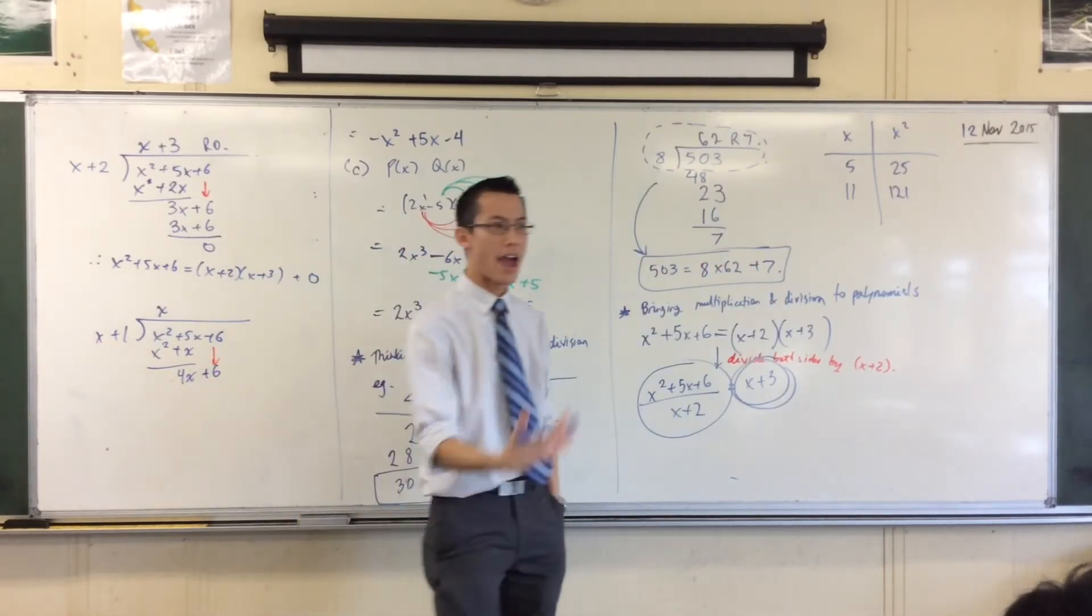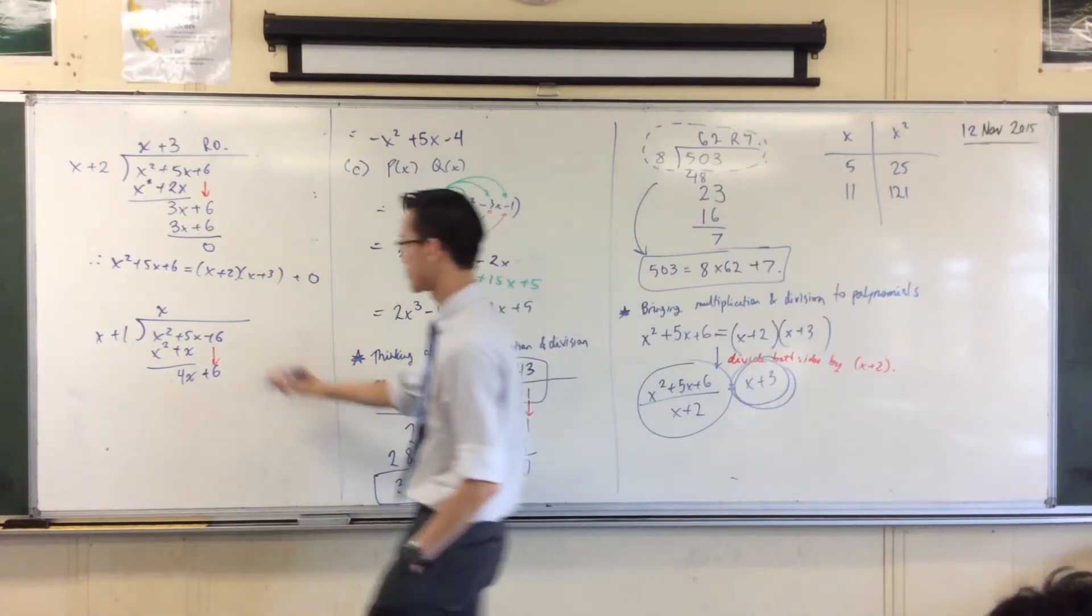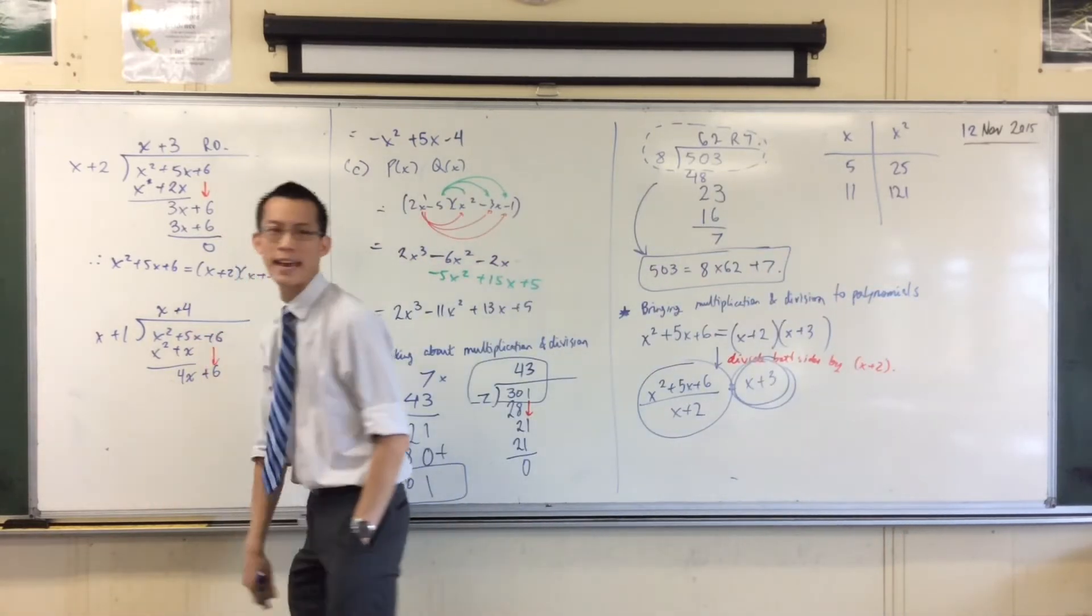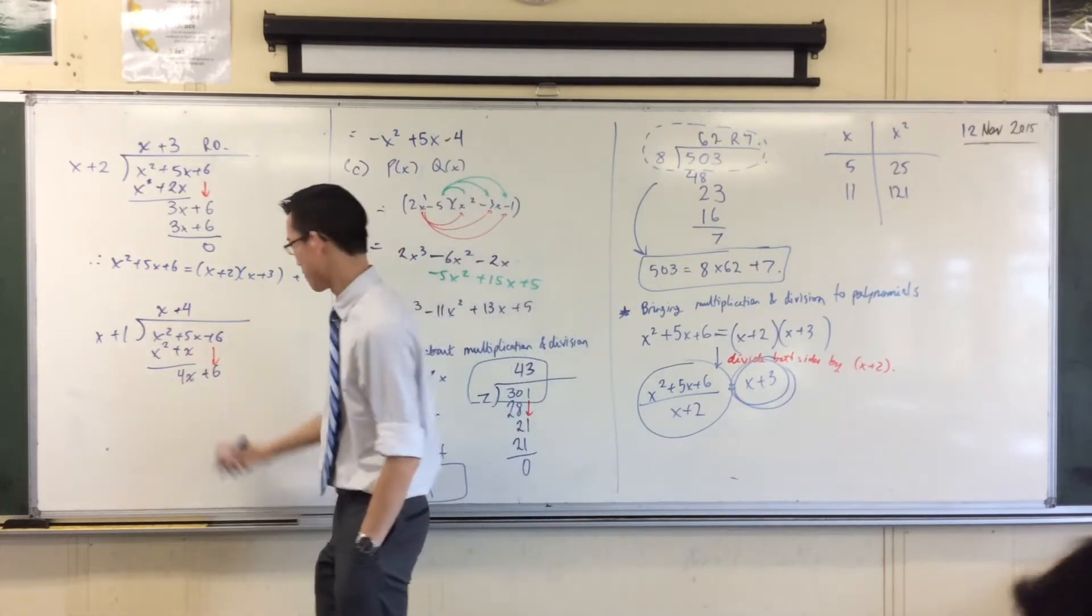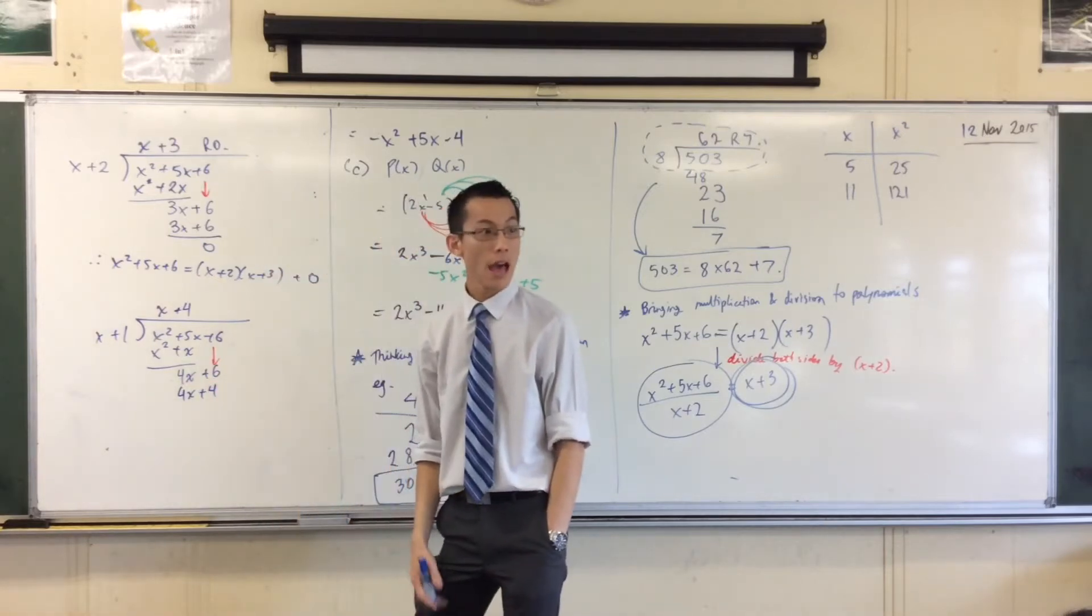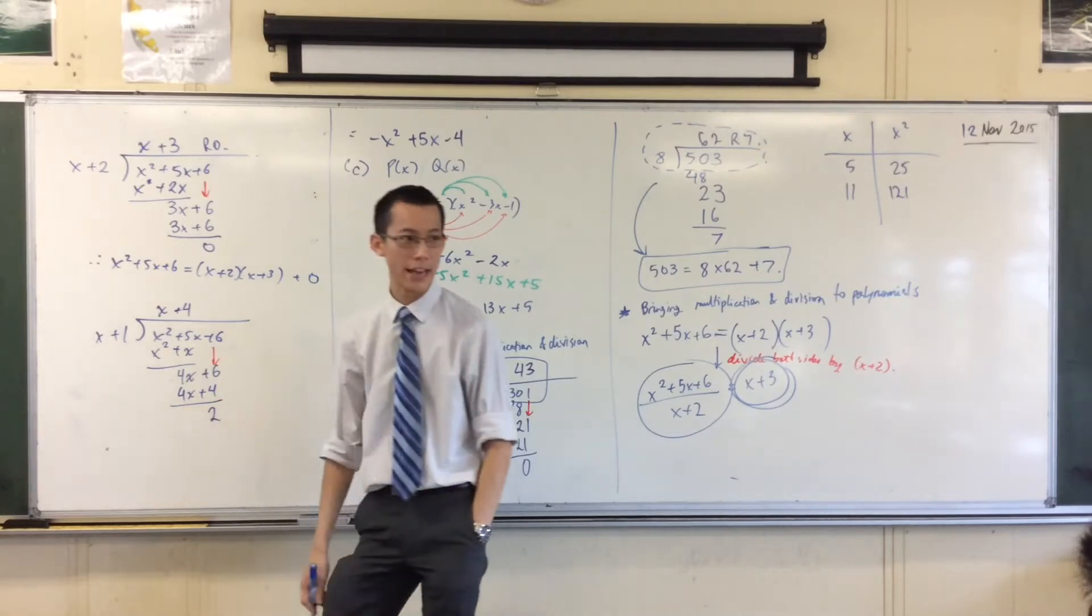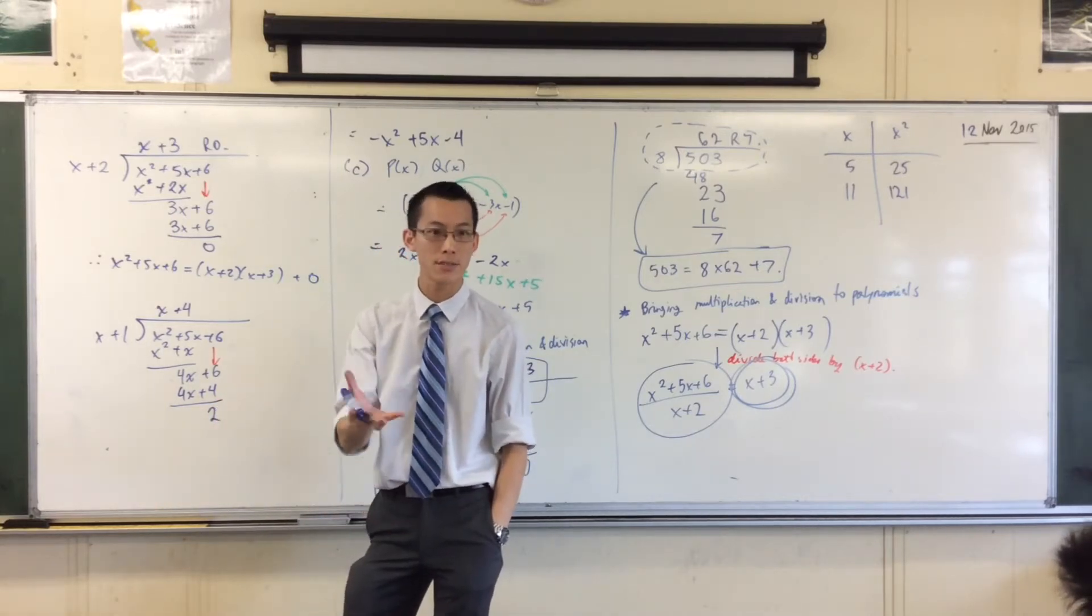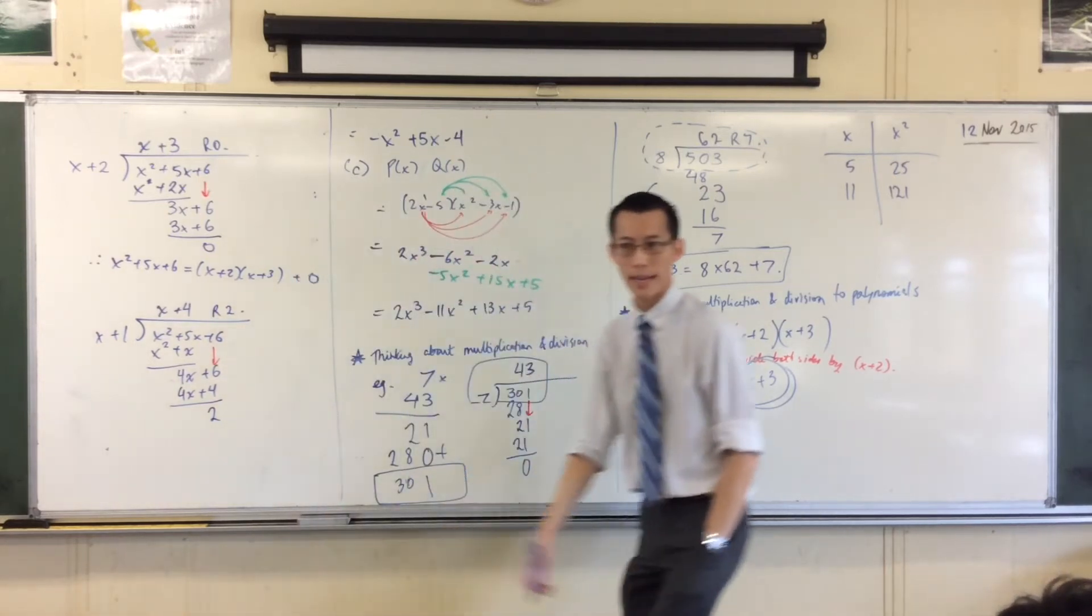And then I say, how many x's go into 4x? 4 of them. Plus 4. Now this step will be slightly different. I multiply the 4 back down. 4x plus 4. And now when I do my subtraction, there's a guy hanging around there. It's not 0. It doesn't divide through cleanly. I have a remainder of 2.